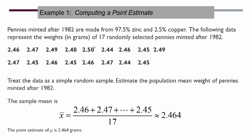Let me give you an example about computing a point estimate. Pennies minted after 1982 are made from 97.5% zinc and 2.5% copper. The following data represents the weight in grams of 17 randomly selected pennies — we just grabbed 17 pennies at random and recorded their corresponding weights. Let's treat this as a simple random sample and estimate the population mean weight of pennies minted after 1982.